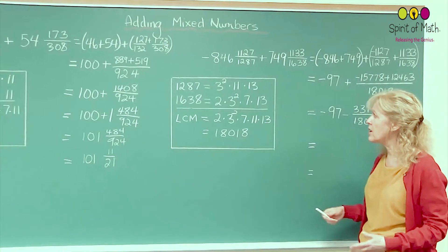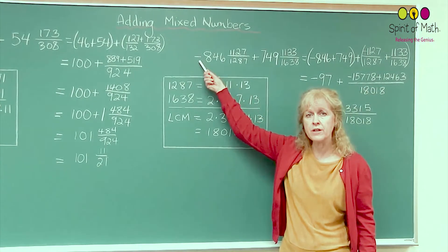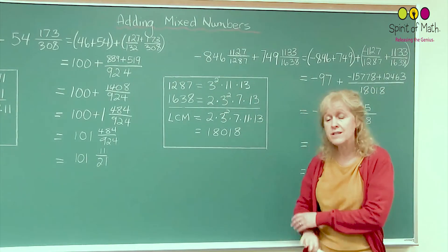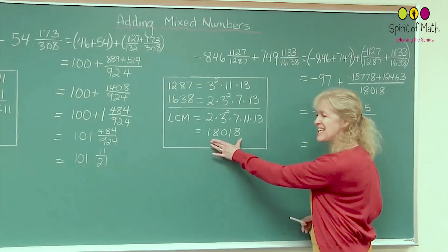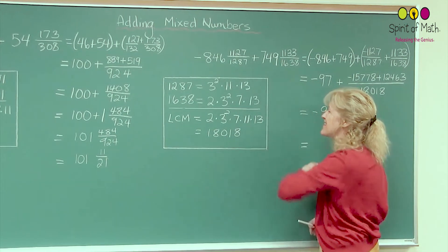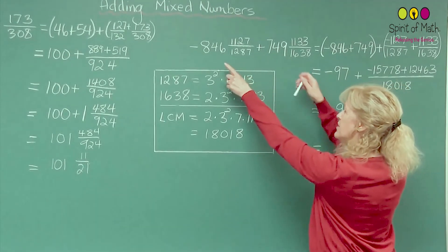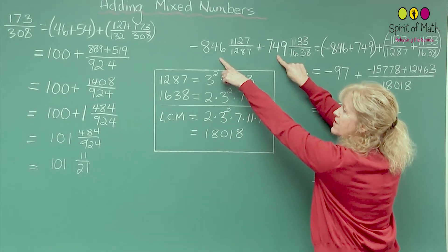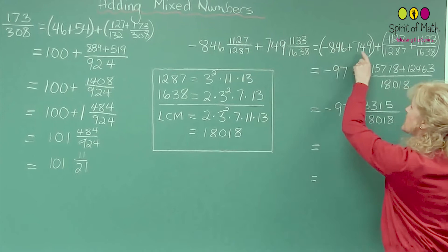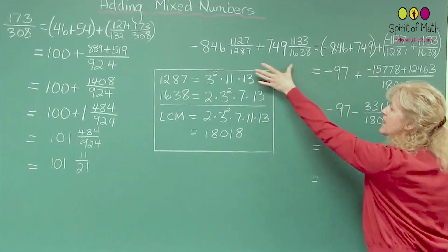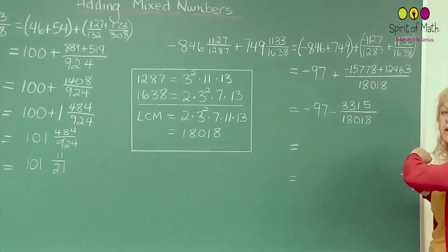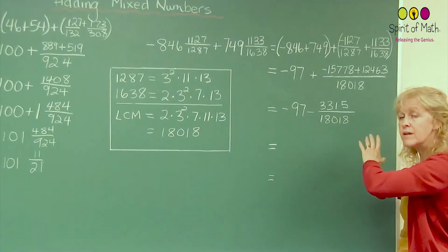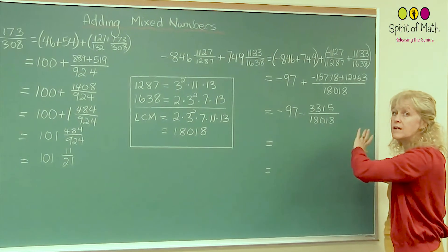The next question is very similar except that it has a negative in front. And when it has a negative in front, it doesn't change the rules. You just do the same thing. You do the LCM again because you have fractions and you have a denominator. But you want to put these two together first. So you have negative 846 plus 749. Then you separate that from the fractional part. So that's all that's happened that first step. Very simple. You just rewrite it looking different.